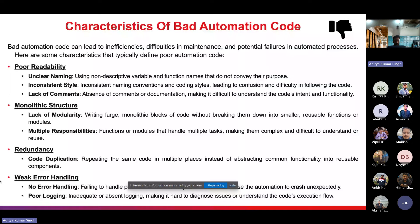Weak error handling — failing to handle potential errors or exceptions — can cause automation to crash unexpectedly. Failing to include try-catch blocks for exceptions like element-not-found or timeout (in Selenium with Java) leads to test execution disruption. Poor logging — inadequate or absent logging — makes it hard to diagnose issues or understand the code execution flow. Failing to log critical events, warnings, or errors during test execution hinders troubleshooting efforts and makes it difficult to identify the root cause of failures.